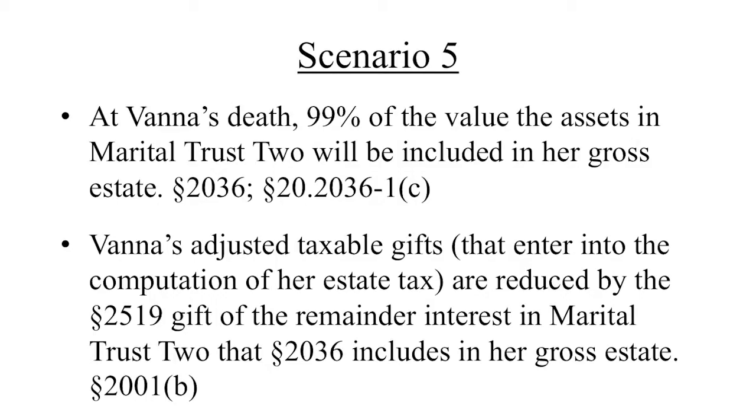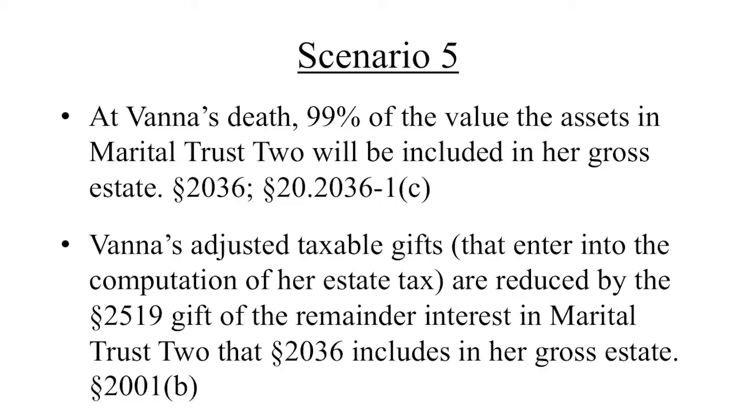She then marries Money's older brother, Even Richer Smith, who has an even larger estate but has used all his exemption. Evan collapses on the honeymoon and is given days to live. While Evan is on his deathbed, Vanna and Money's children realize that when Evan dies, he becomes Vanna's last deceased spouse, causing her to lose Money's DSUE amount. The solution: sever the 45 million dollar marital trust into two — Marital Trust One with about 30 million, Marital Trust Two with 15 million. Vanna disclaims just one percent of the income interest in Marital Trust Two, triggering Section 2519 — a deemed gift of the entire remainder interest worth about 5.243 million — using Money's DSUE amount before Evan dies.